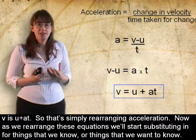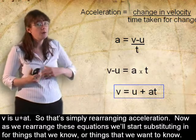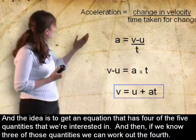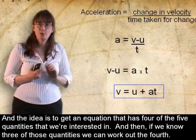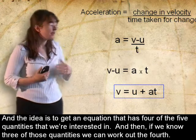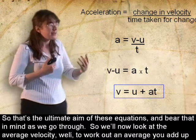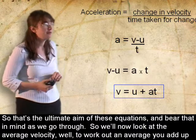Now, as we rearrange these equations, we'll start substituting in for things that we know or things that we want to know. And the idea is to get an equation that has four of the five quantities that we're interested in. And then, if we know three of those quantities, we can work out the fourth. So that's the ultimate aim of these equations, and bear that in mind as we go through.